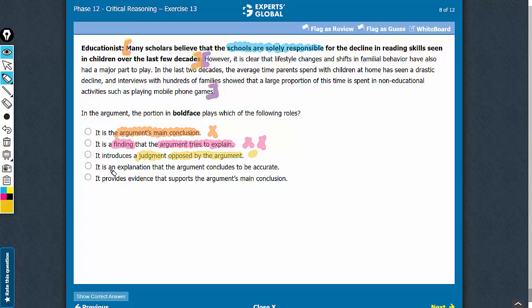Look at D. No, it is not an explanation that the argument concludes to be accurate. The argument concludes that the first boldface is not accurate. D should be eliminated.